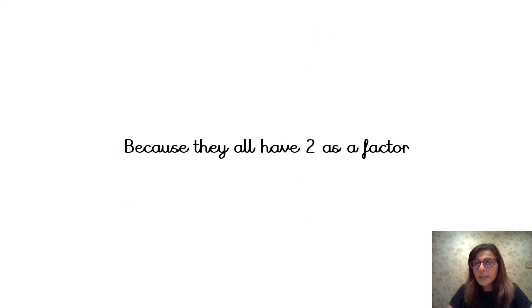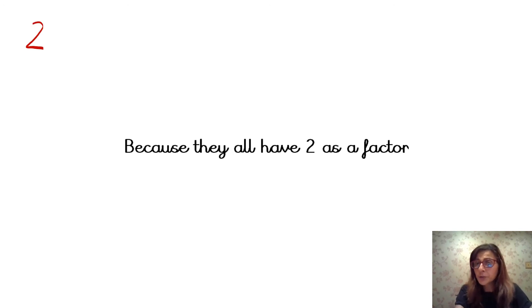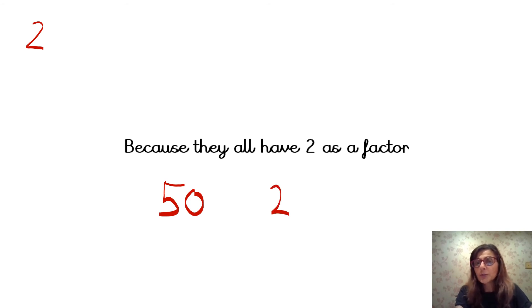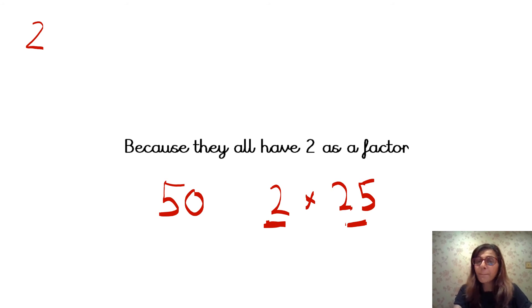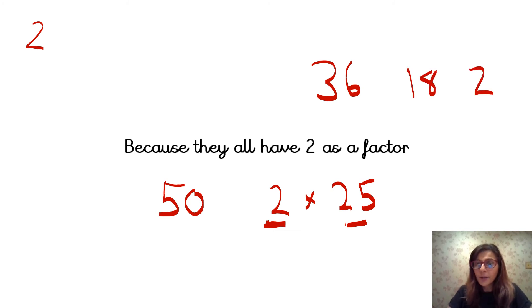All the other even numbers have 2 as a factor, which is why they are not prime numbers. So apart from the number 2, which is the only even prime number, all the other even numbers have 2 as a factor. For example, the number 50 — 2 times 25 is 50, so we've got a factor of 2 and a factor of 25. And 36 — we know it can be divided by 2 because 18 times 2 is 36. An even number can always be divided by 2, it has 2 as a factor, which makes it not a prime number.